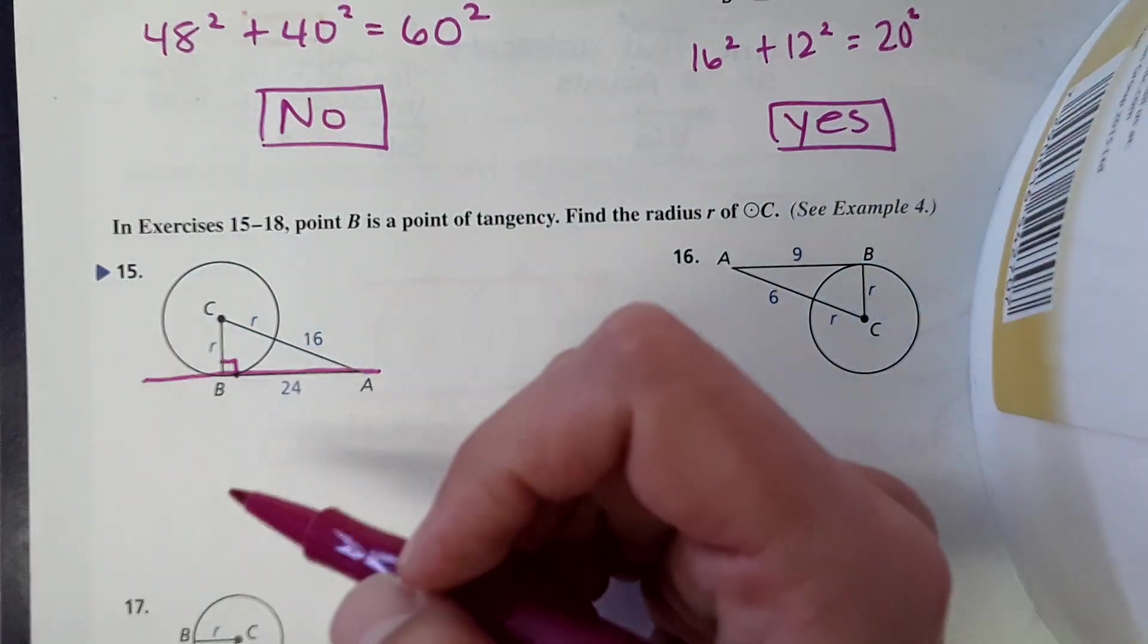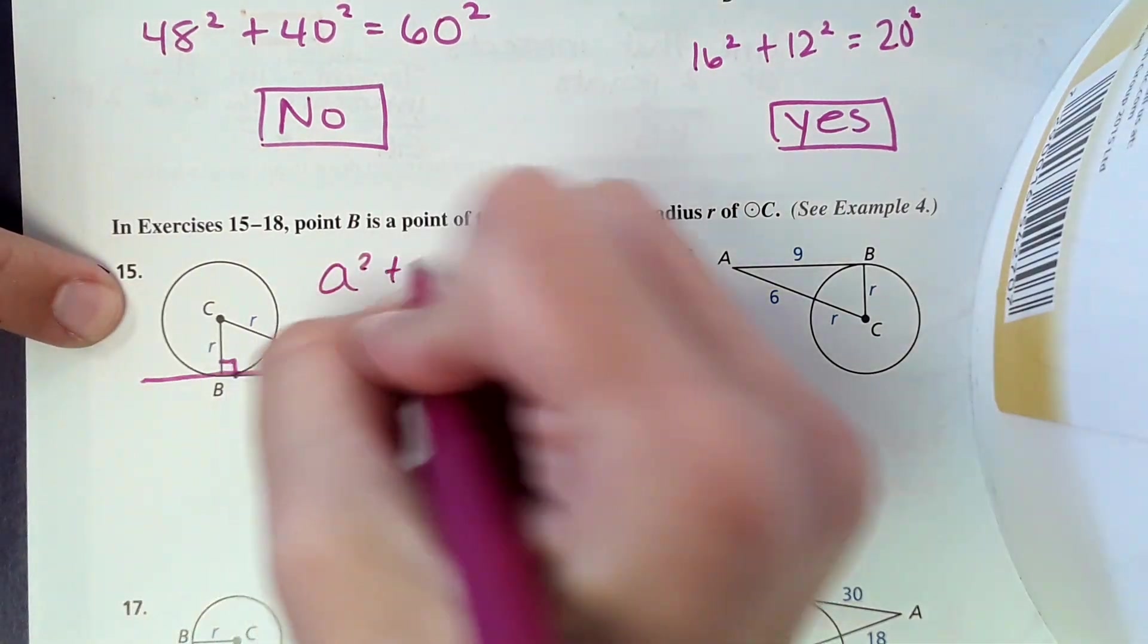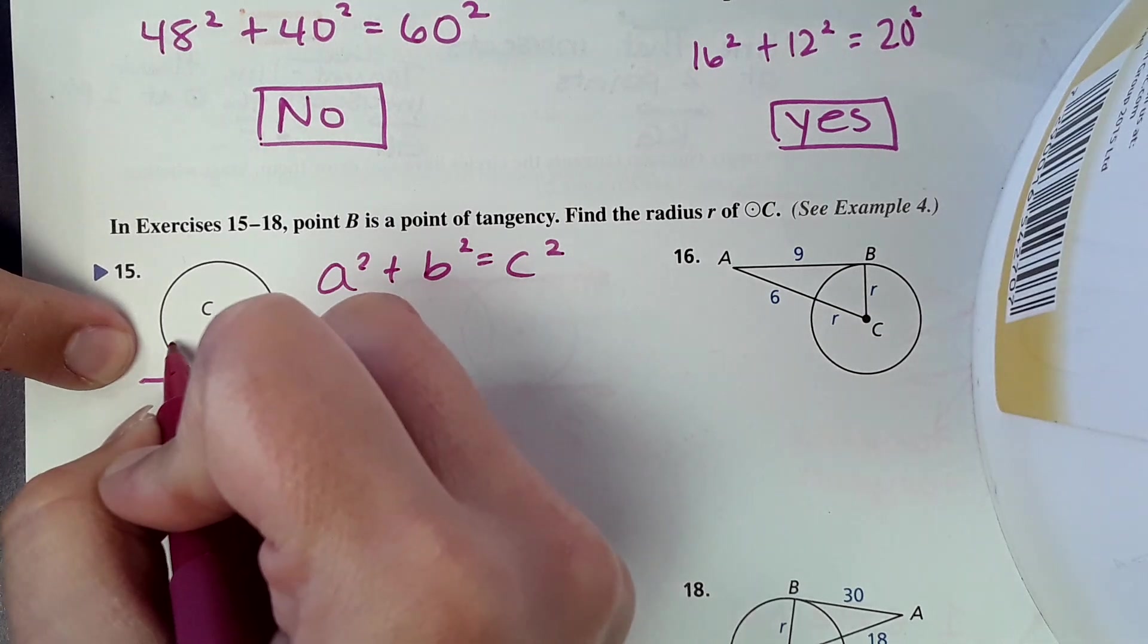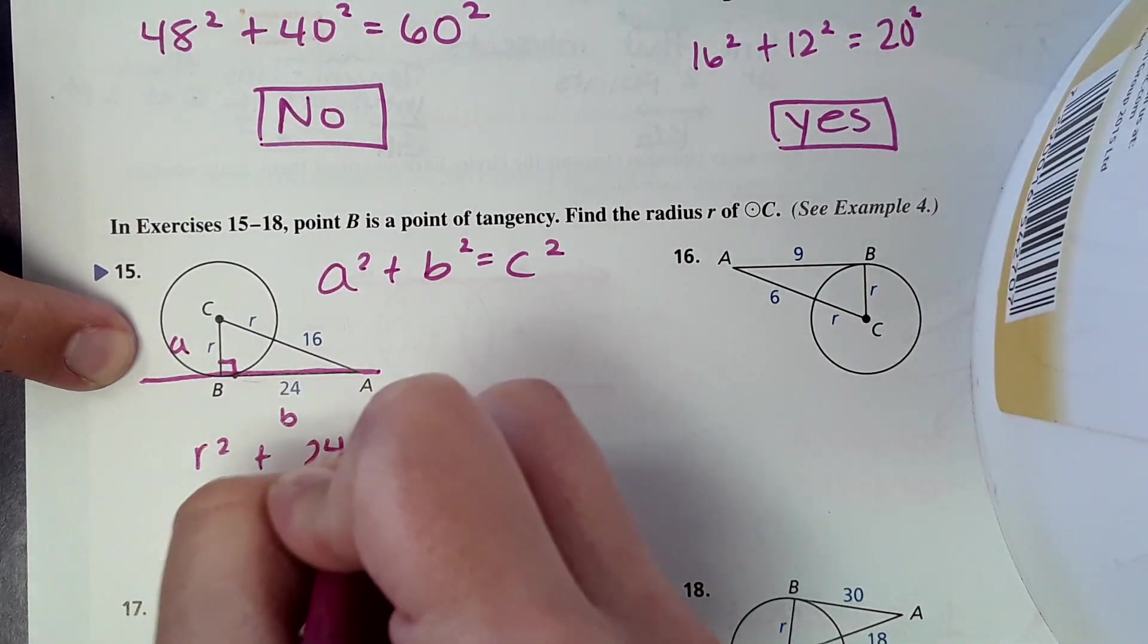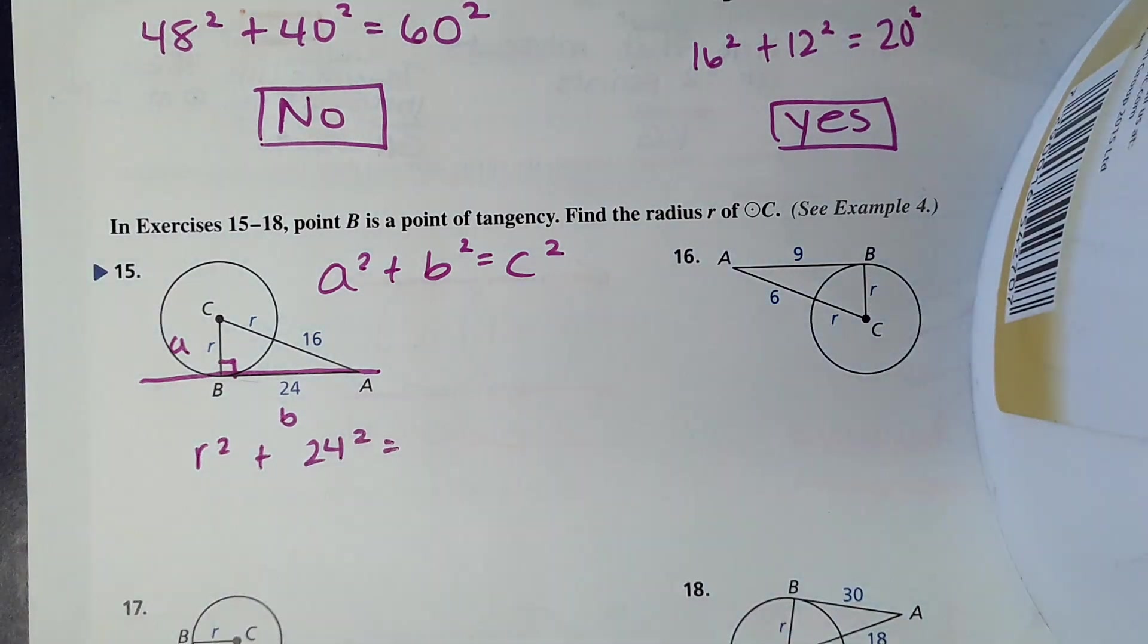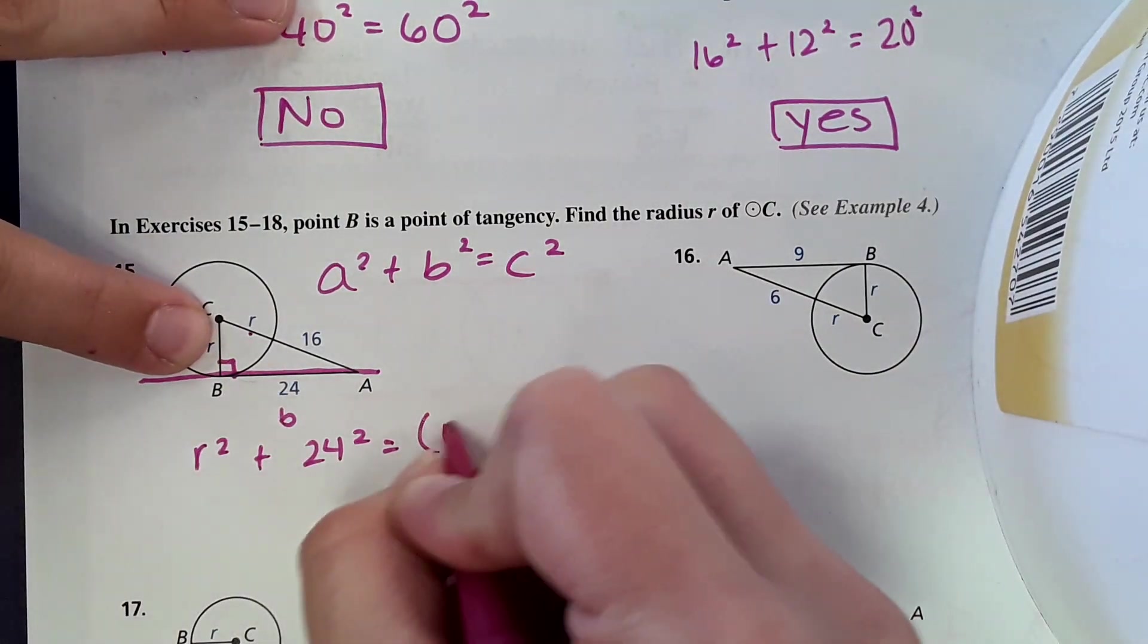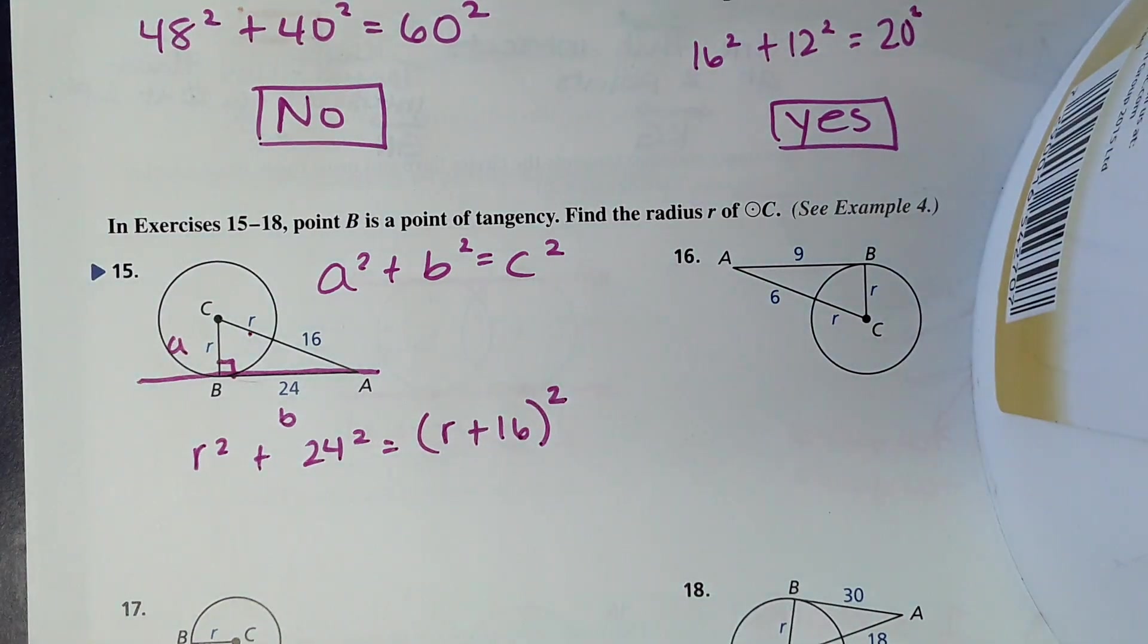We don't know either of those. We don't know the radius. So we're still going to use Pythagorean theorem, but it'll look a little bit different. So this would be your A and your B. So R squared plus 24 squared equals, and then your C squared, which is R plus 16.